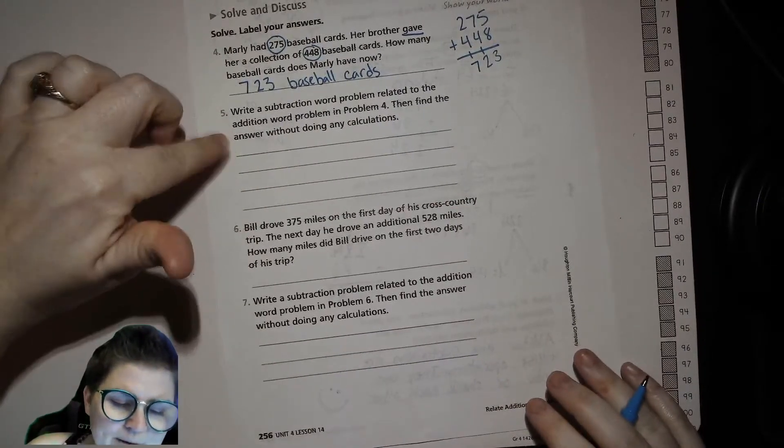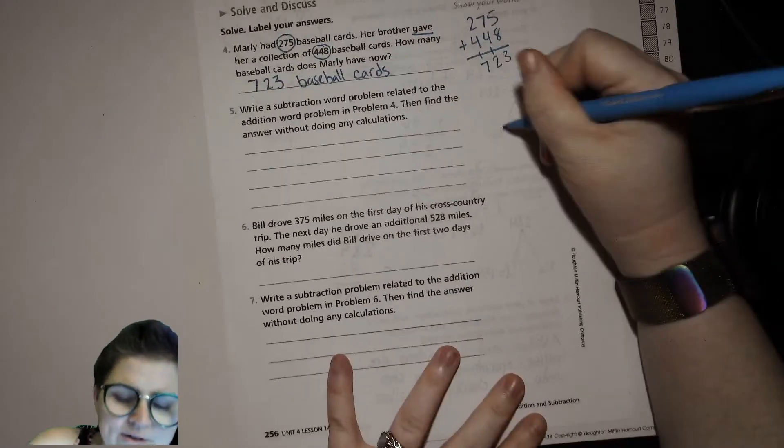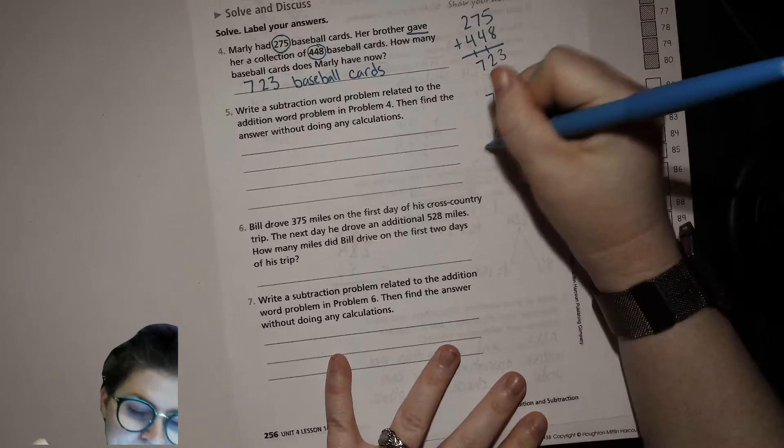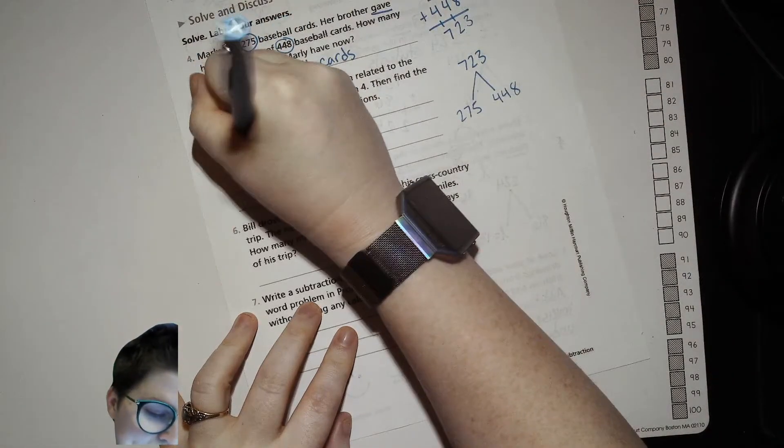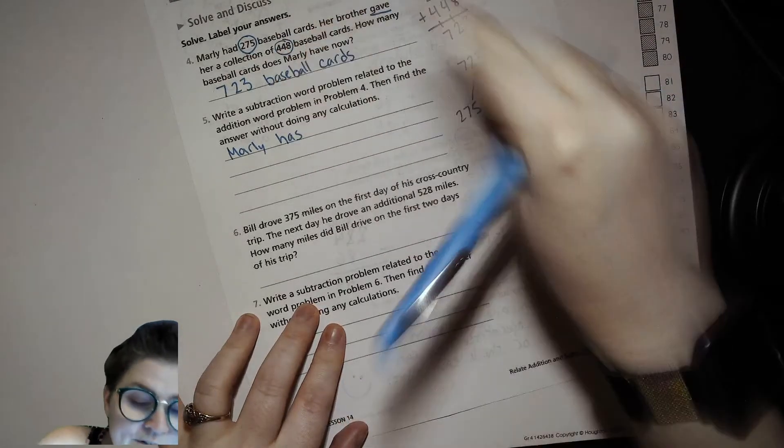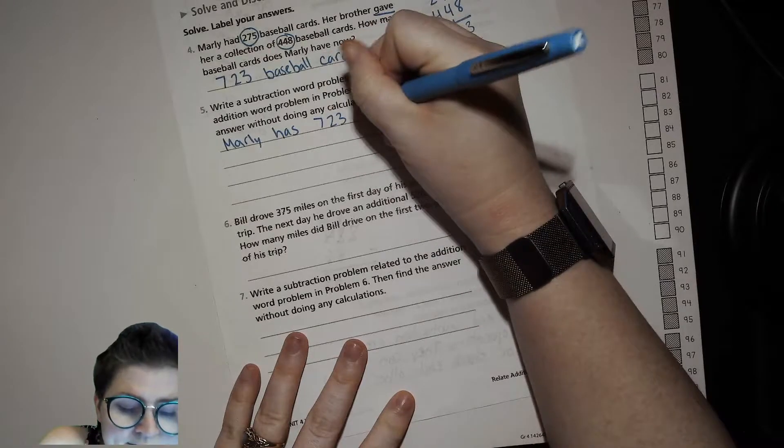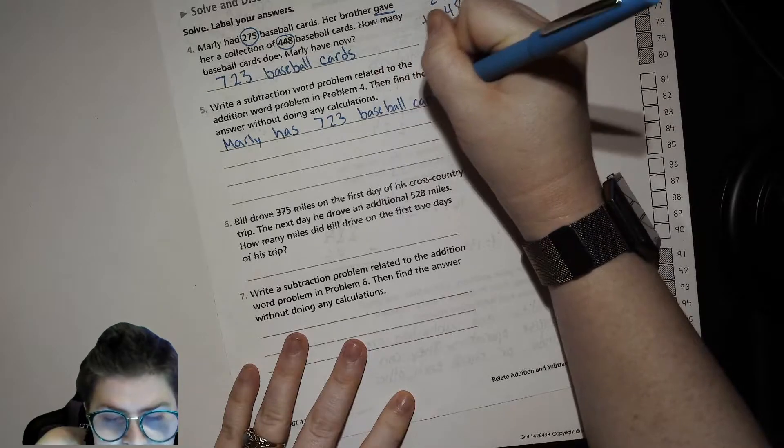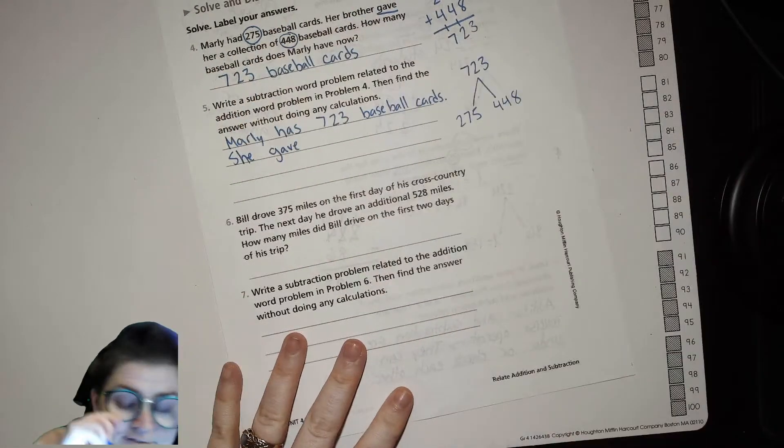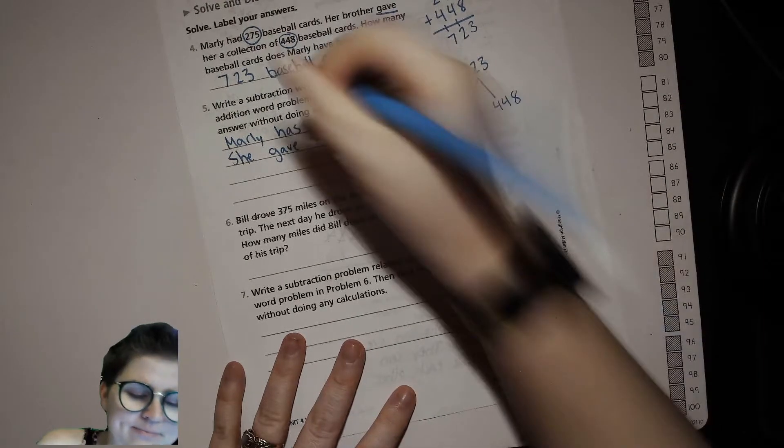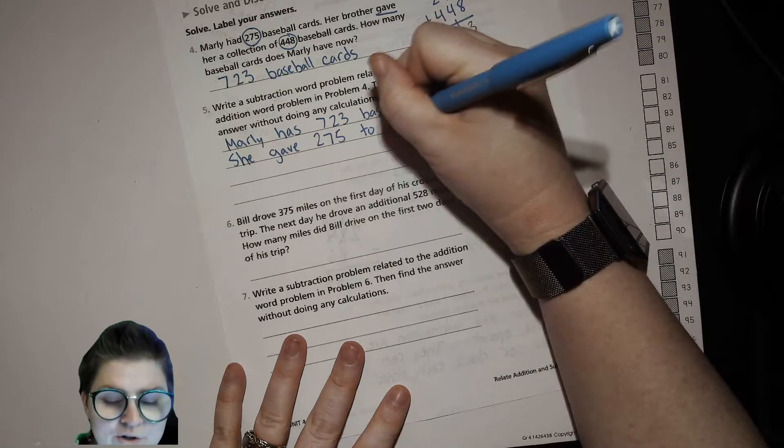Now write a subtraction word problem related to the addition word problem, then find the answer without doing any calculations. So our total was 723, one of our partners was 275, the other partner was 448. So let's say Marley has 723—we're using our total first because that's what she's going to have to take some away. She gave 275 to her neighbor.